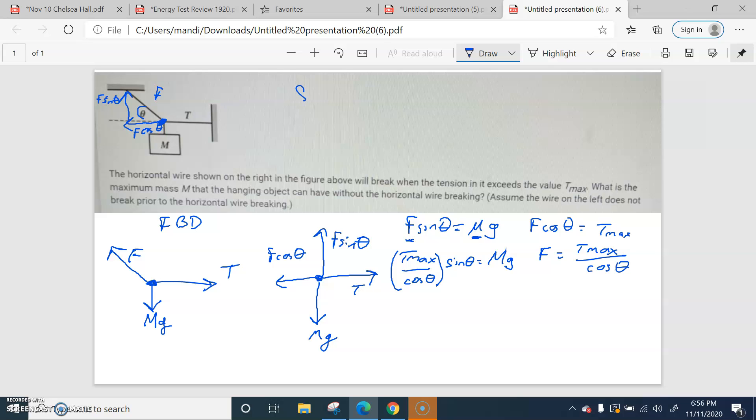Now, there's a law from trig that you need to know. Sine theta divided by cosine theta for some reason equals tangent of theta. I don't know why. I just know that it does. So we have a sine over cosine situation here. So T max also equals the tangent of theta. That equals mg.